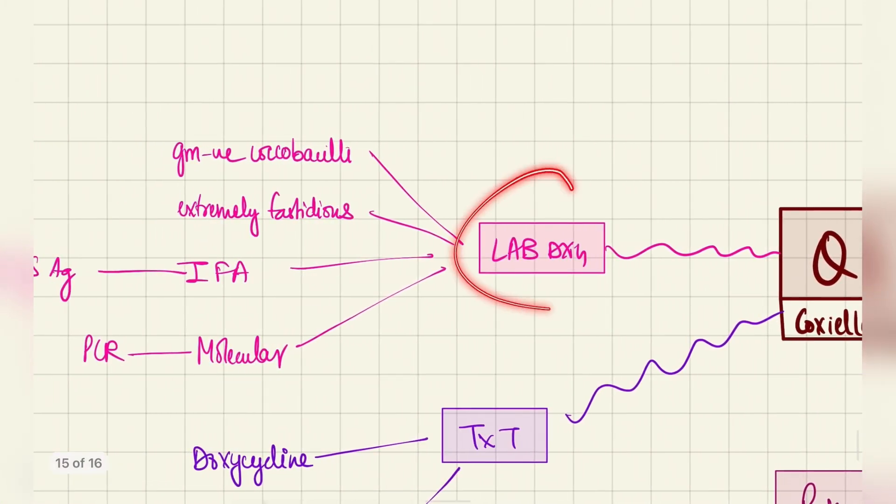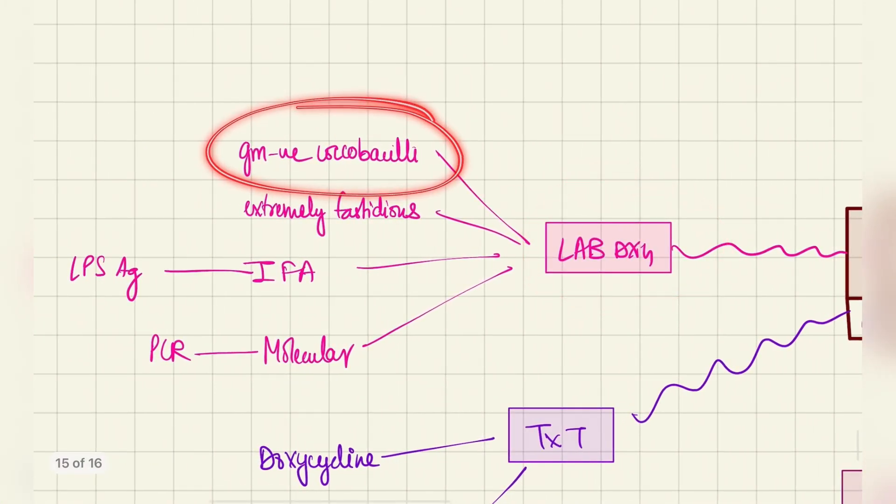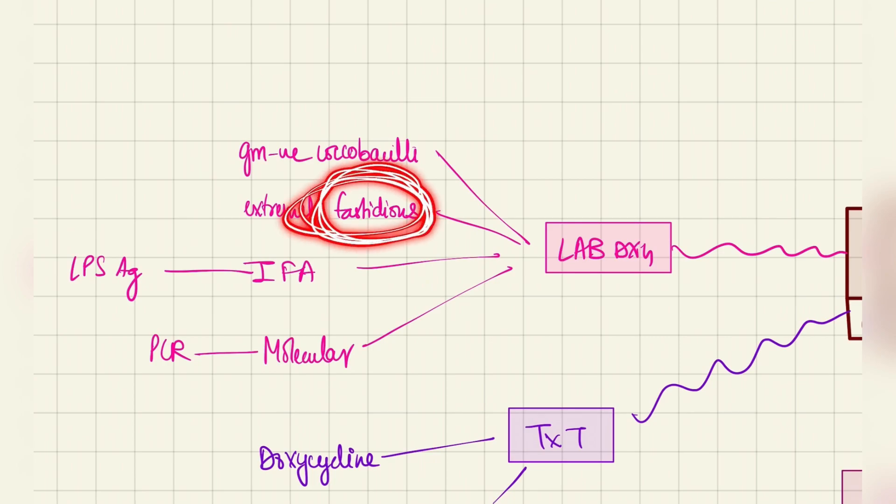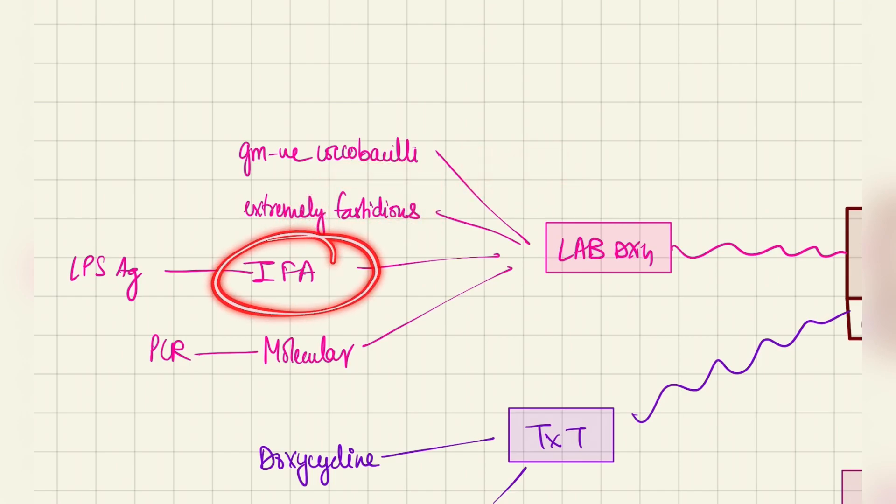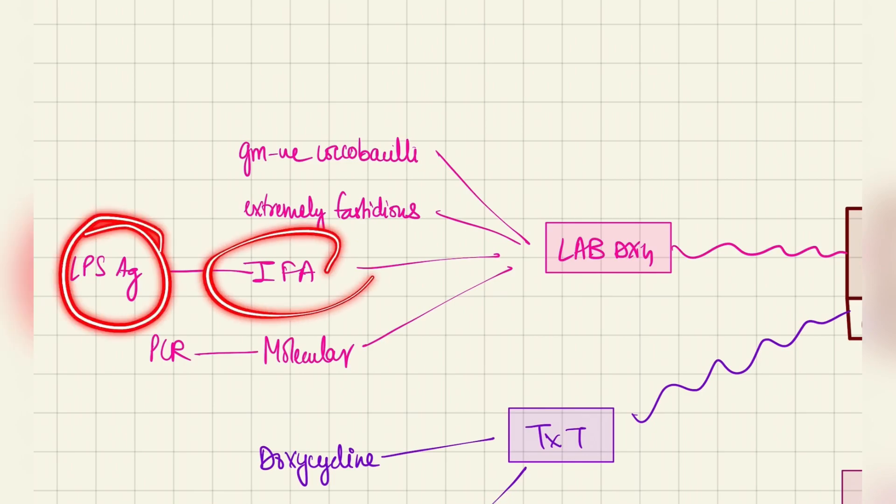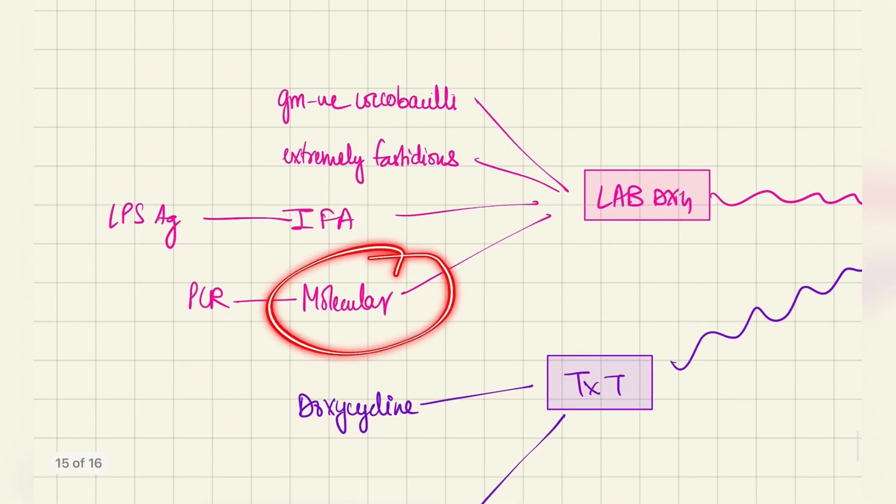Next, coming to the lab diagnosis, it's a gram-negative coccobacilli. Extremely fastidious, that means it needs a lot of nutrition and other supplements to survive. IFA shows LPS antigen, we can detect LPS antigen in direct fluorescent antibody testing. Molecular: using PCR we can detect them.